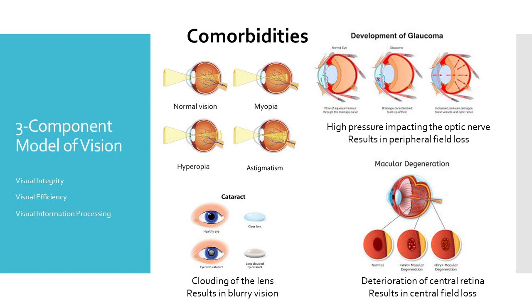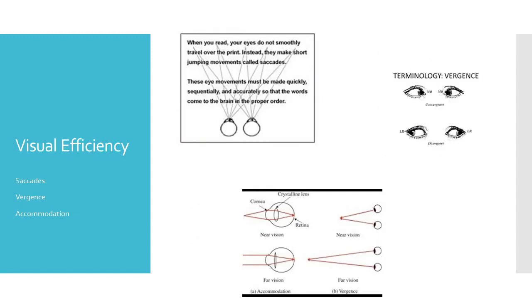We should consider if they possibly have a history of glaucoma, which is high pressure in the eye on the optic nerve resulting in a peripheral field loss. We also have to consider if they have macular degeneration, which is a deterioration of the central retina resulting in a central field loss, or if they have a cataract, which is a clouding of the lens causing blurred and unclear vision. We want to keep all of these visual integrity disorders in mind because they can be impacted even further by visual efficiency disorders.